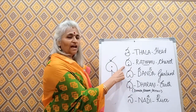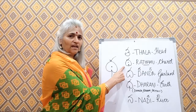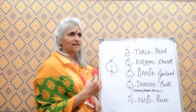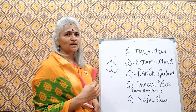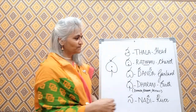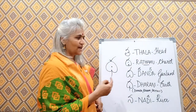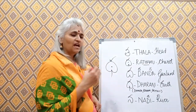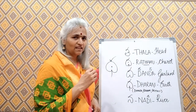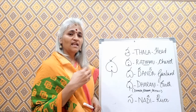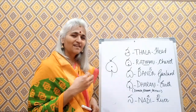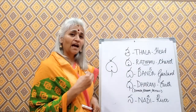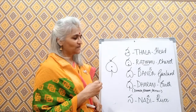Now, ta — tha. Generally there are no words starting with tha. Rathamu — rathamu. Tha is the maha pranam. Rathamu means chariot.